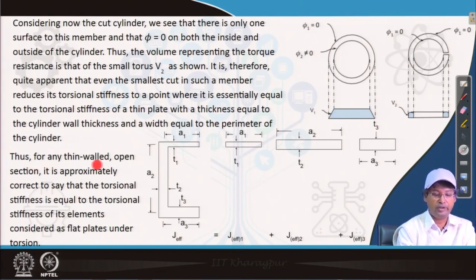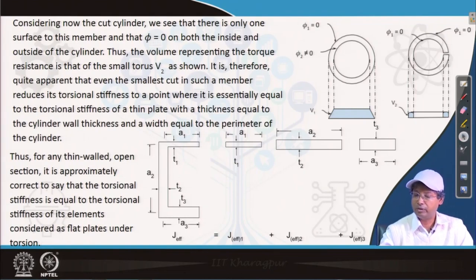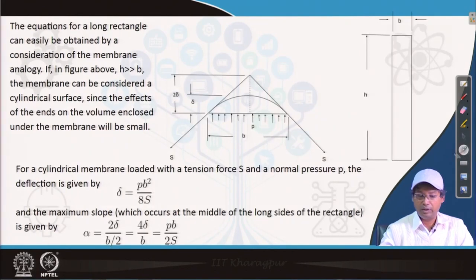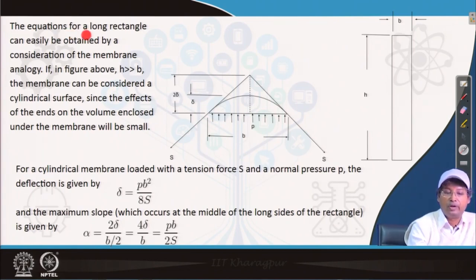From the membrane analogy we can easily conclude that if we are able to find out J effective separately for these sections which makes the C section—A₁ is this one, A₂ is this one and A₃ is this one—then we can easily have summation of those J effectives to find out the J effective for the total C section. Thus for any thin wall open section it is approximately correct to say that the torsional stiffness is equal to the torsional stiffness of its elements considered as flat plates under torsion. With that concept it gives us some approximate method of analysis that helps a lot for the initial iteration.